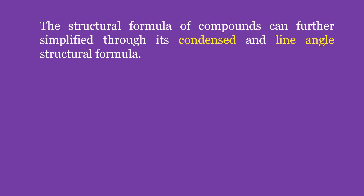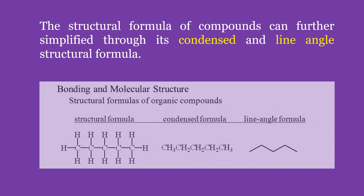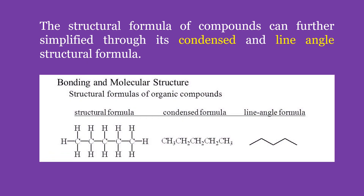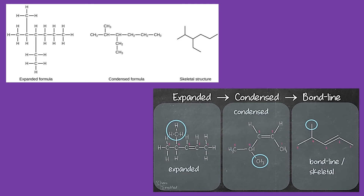The structural formula of a compound can be further simplified through its condensed and line-angle structural formula. A condensed and line-angle structural formula still shows the arrangement of the different atoms in the molecule and how they are bonded to each other. However, for hydrocarbons, the arrangement of carbon atoms is still shown in their condensed structural formula, but carbon-to-hydrogen bonds are not shown anymore. These are examples of the different structural formulas of a hydrocarbon that still have the same nomenclature.